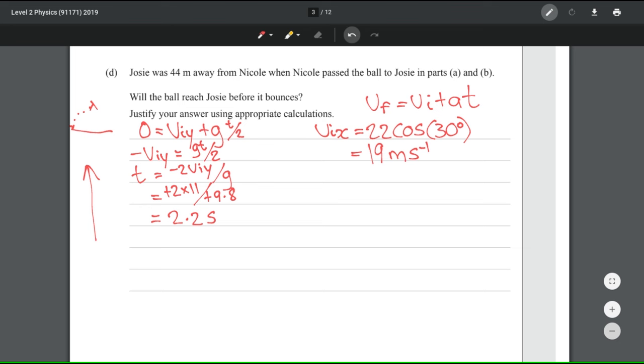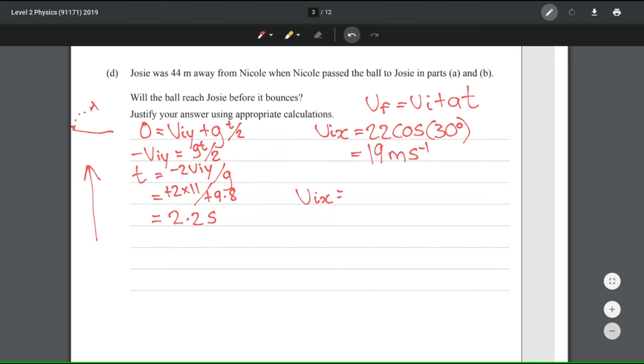An equation you should be all familiar with is VIX is equal to distance over time, one of the most simplest. To rearrange that for our distance, that gives us distance equals VIX times time. If we put in our numbers, that's 19 times 2.2, which gives me 41.8, which I'm going to round to 42 meters. Now, in the context of our question, we're asked if the ball bounces before it reaches Josie, who is 44 meters away. And given that it bounces at 42, based on our calculations, the ball bounces two meters in front of Josie.